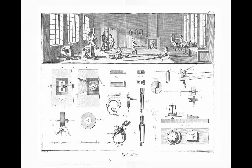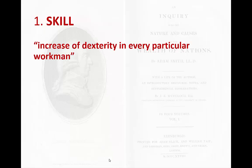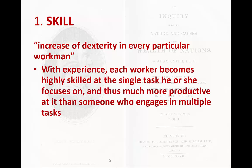Smith goes on in the first chapter to talk about what's driving this huge productivity gain, and he comes up with three reasons. First is skill. Smith talks in particular about the increase of dexterity in every particular workman. The idea is that by doing something a lot, you get good at it — practice makes perfect. So experience gets you skill, and then a lot more productivity than someone who's new or untrained in a particular task.